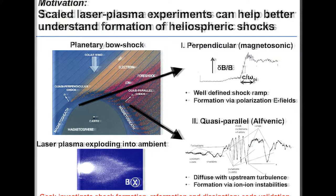Or if the shock normal is more aligned with the magnetic field, you create a so-called parallel or Alfvénic shock wave, which is much more diffuse with a lot of turbulence and waves upstream and downstream. In the experiment we try to reproduce this situation by ablating a laser plasma.